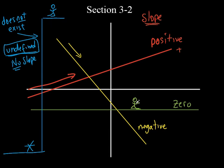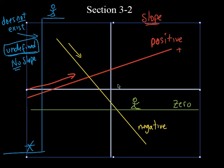Remember these analogies — these little pictures to think about in your mind. This is zero slope. This is no slope. If you're going from left to right and going up, it's positive. If you're going down from left to right, it's negative. Those are all important things when we talk about slopes. The slope is basically the slant of the line — how steep it is or how flat it is.